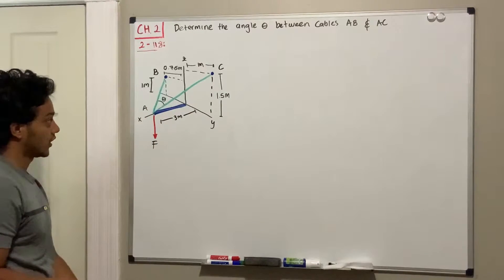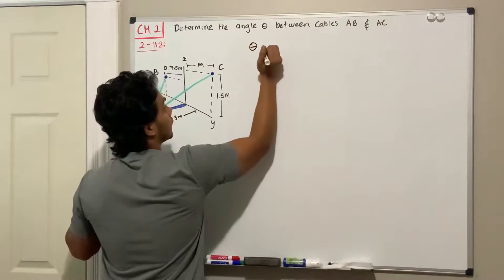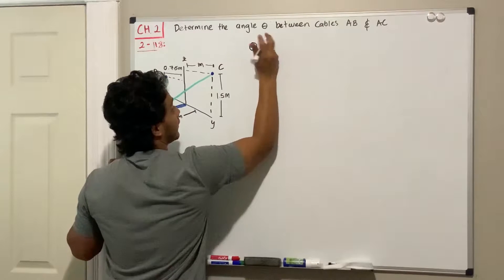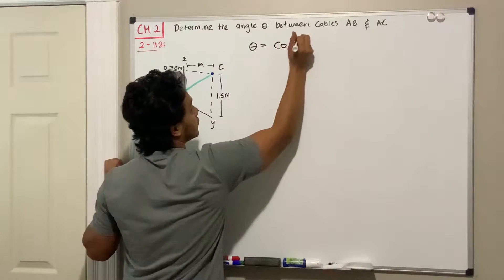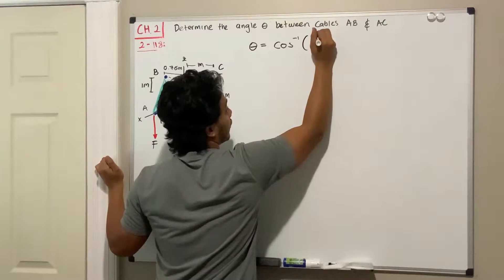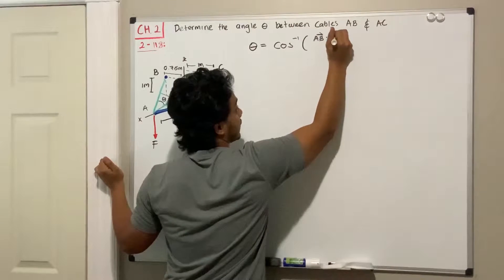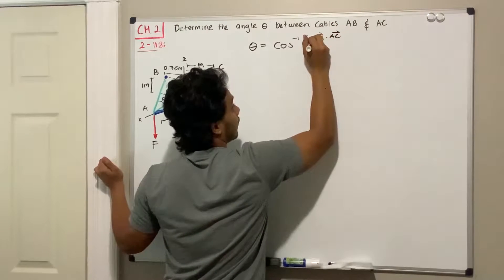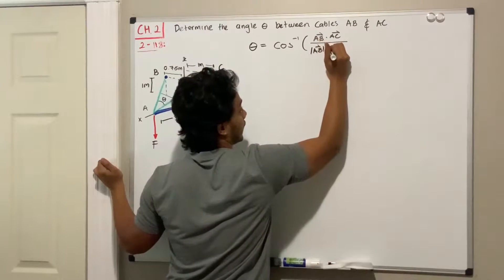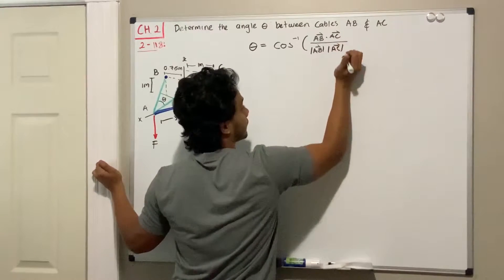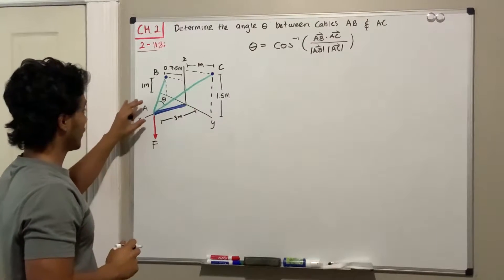to find the angle between them. In order to do that, we're going to use the formula we applied in the previous video. Theta is equal to the inverse cosine of the dot product of the two vectors, so vector AB dot AC, all divided by the magnitude of both vectors: the magnitude of AB and the magnitude of AC. Now, in order to find these vectors, we're going to locate